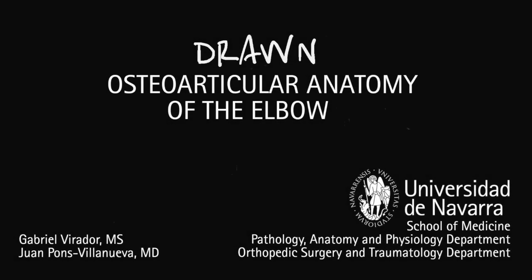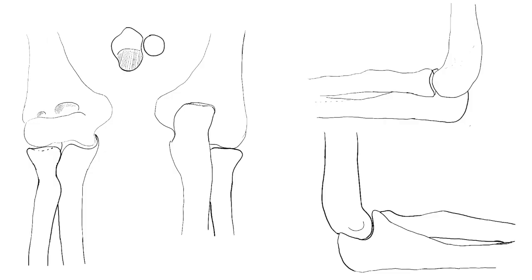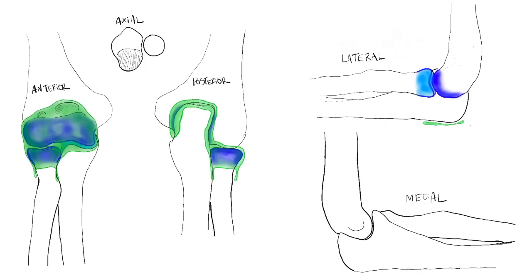In this video, we will review the basic anatomy of the elbow. The elbow is a synovial joint composed of the humerus, the ulna, and the radius. We will review this joint from anterior, posterior, lateral, medial, and transverse viewpoints. We will progress gradually, starting with the most relevant structures of the osseous anatomy, then working through the cartilage, the synovial capsule, and ending with the ligaments.